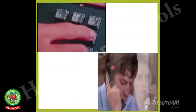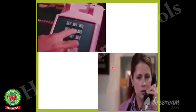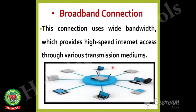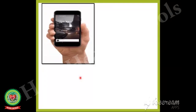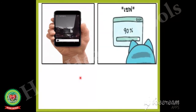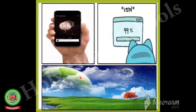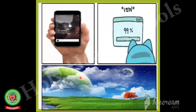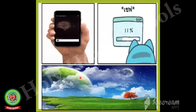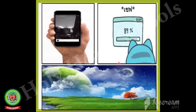The next type of internet connection is broadband connection. This connection uses wide bandwidth which provides high-speed internet access through various transmission mediums. It is faster than a dial-up connection. Using broadband, you can share videos, download music or photos within no time. In broadband connection, you are free to make and receive calls while online.